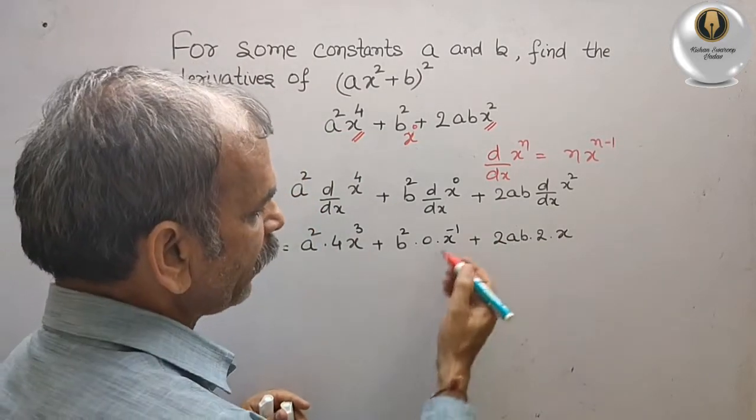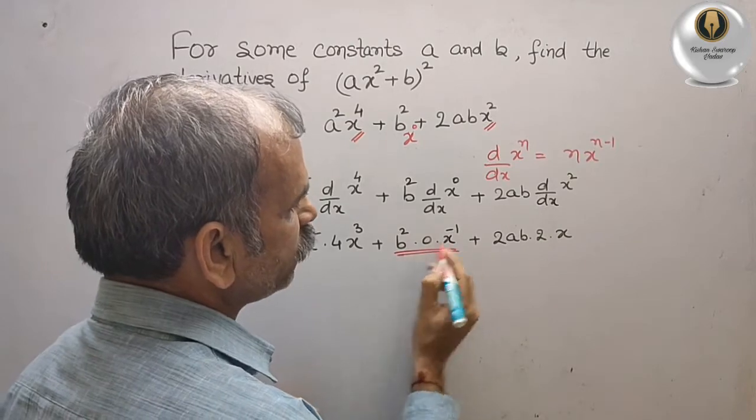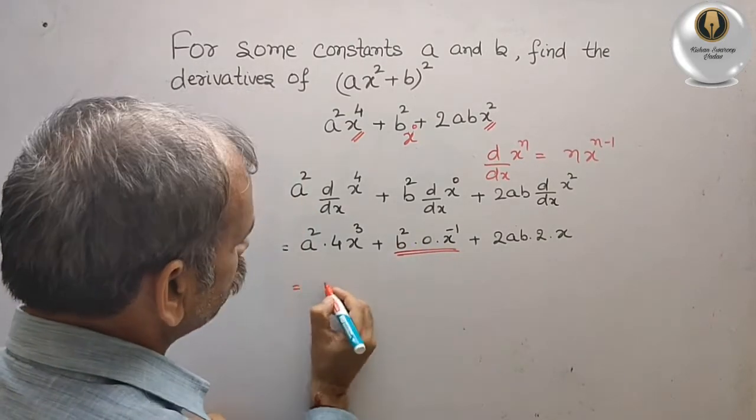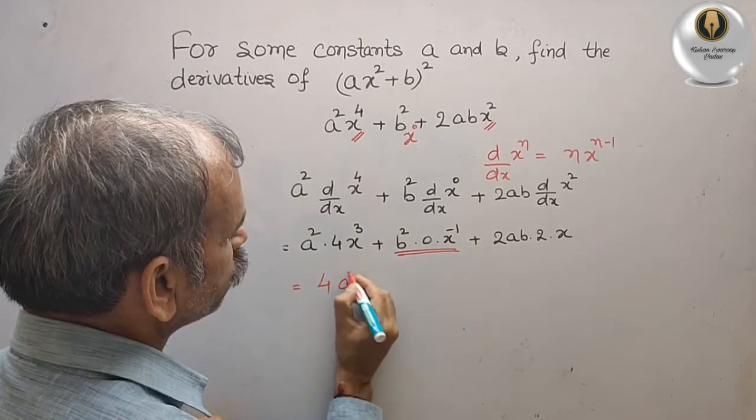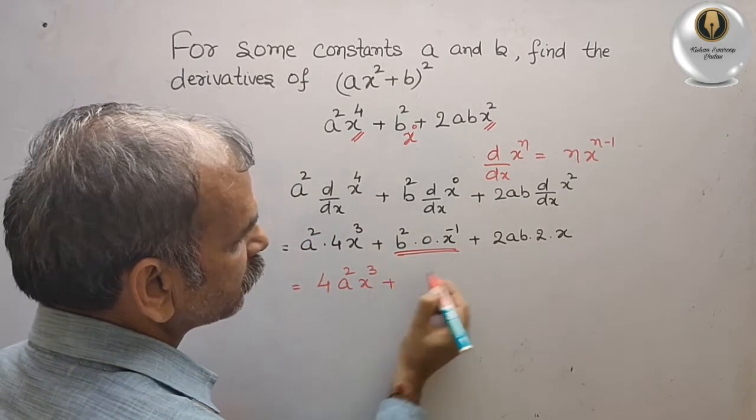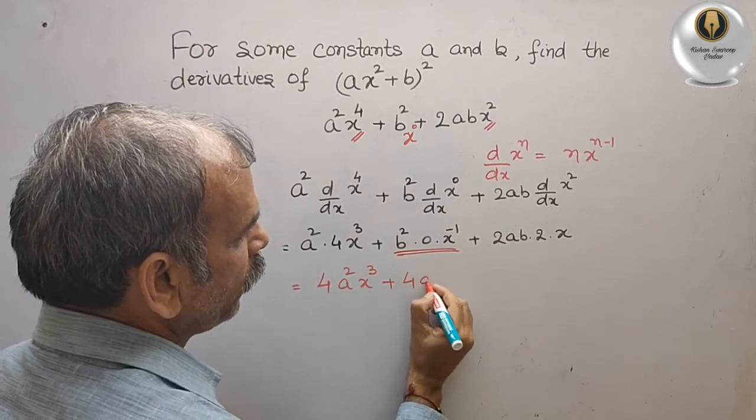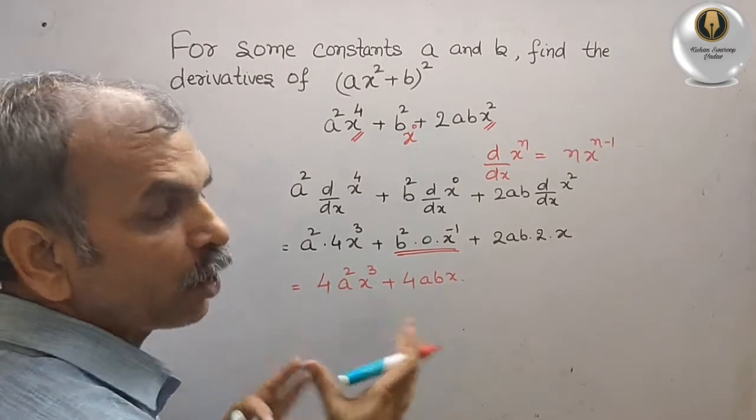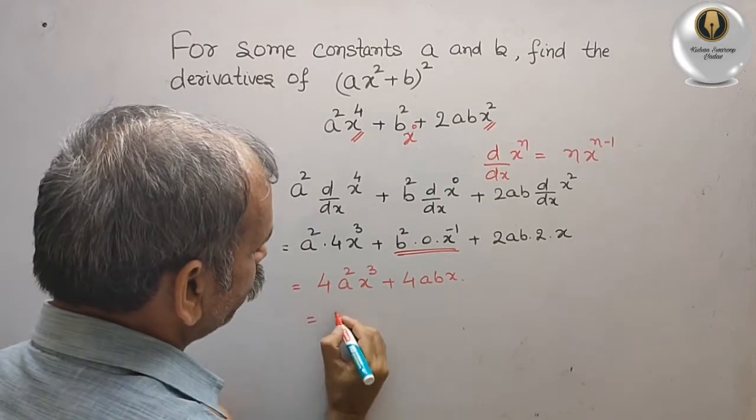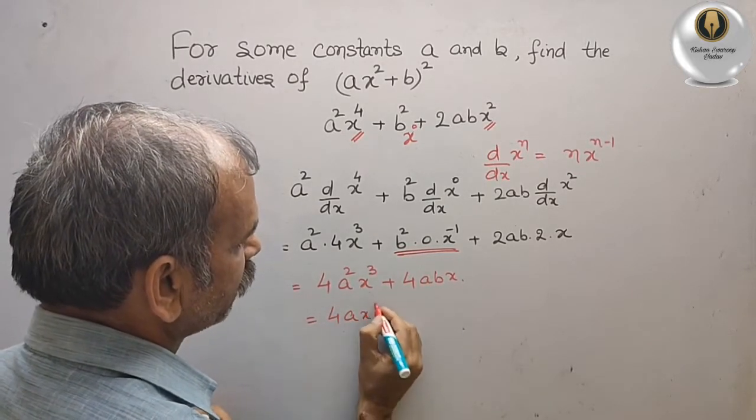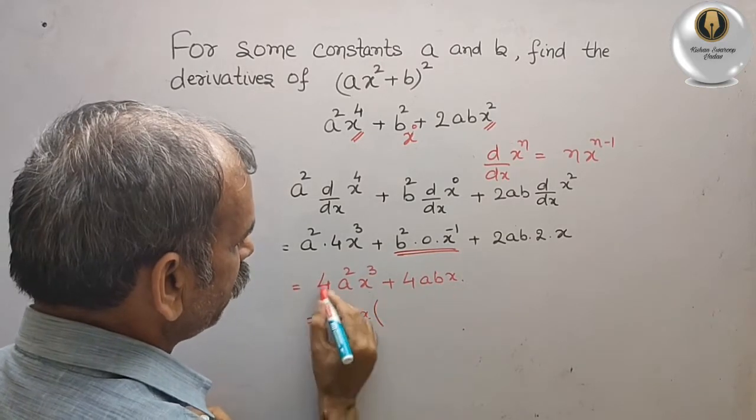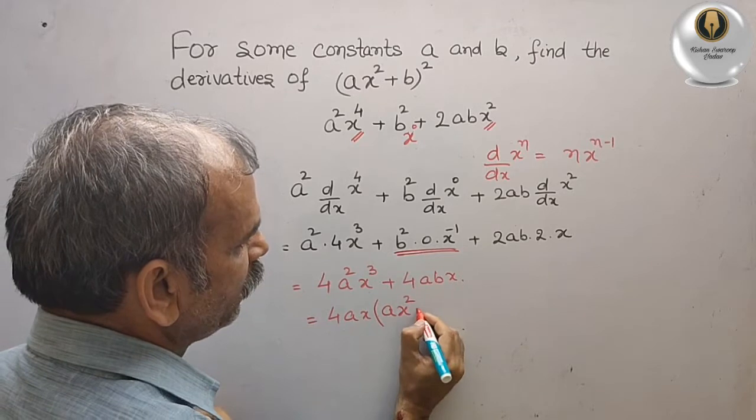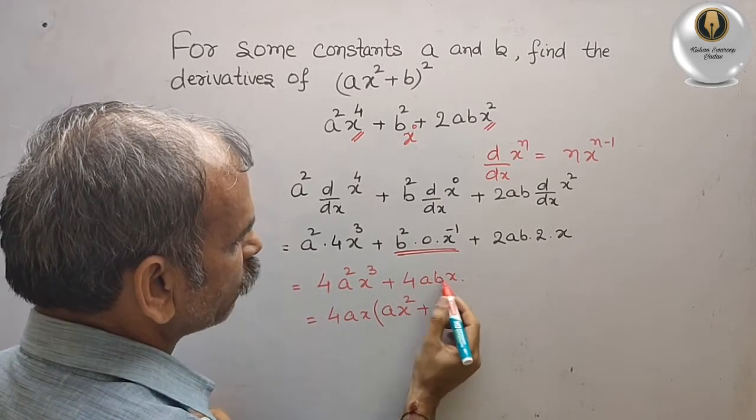As I have already told, wherever constant is there, the value is 0. Now your answer is 4a²x³ plus 4abx, or you can write it as by taking the common: 4ax is the common one. Here we will get ax² plus here you will get b.